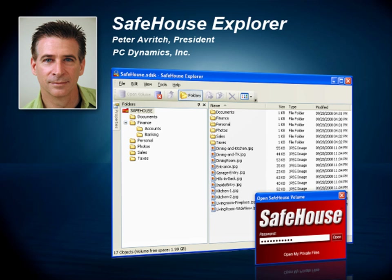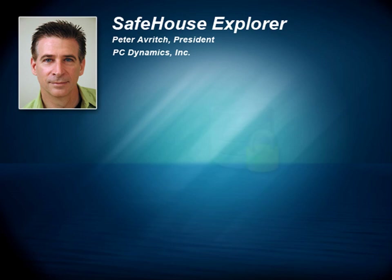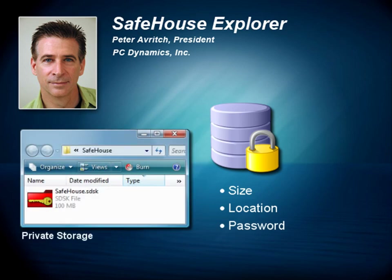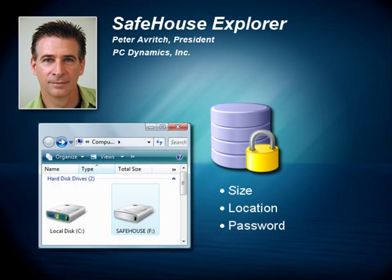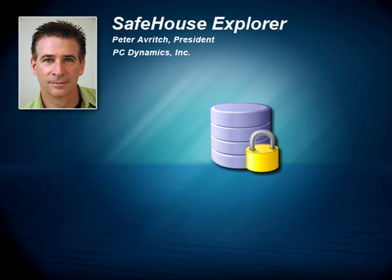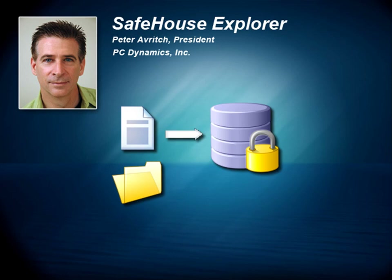Before I jump into the demo, let me first explain how the software works. You start by creating a data vault to hold your files. You pick the size, location, and secret password. You can create as many of these vaults as you like — they're just large container files. However, when you open them up in Safehouse Explorer using your password, they become new temporary disk drives in Windows. You can then drag and drop your confidential files into Safehouse Explorer, or access the temporary disk drive letter from within your favorite Windows applications. This is what makes Safehouse Explorer so simple and convenient.